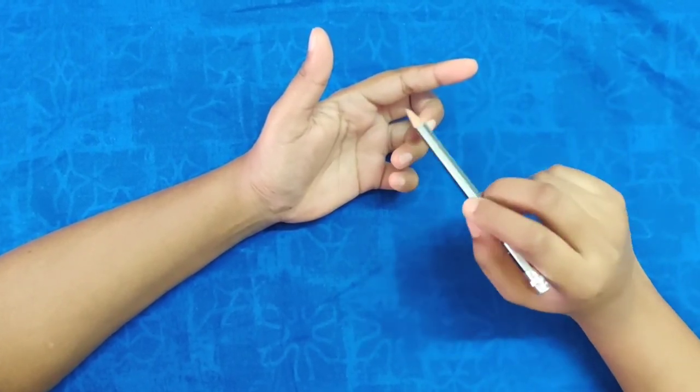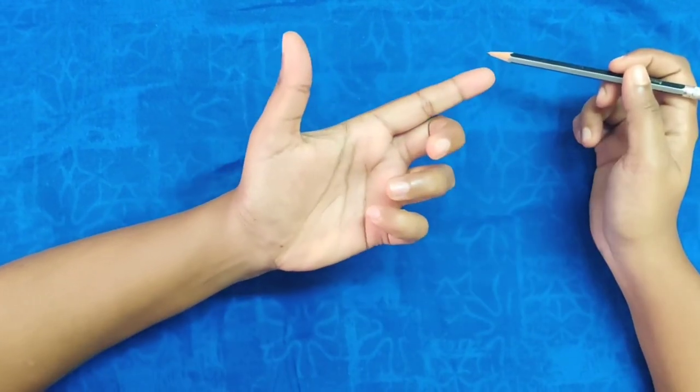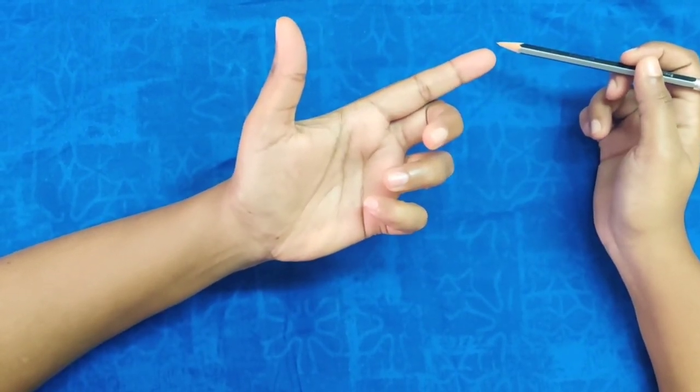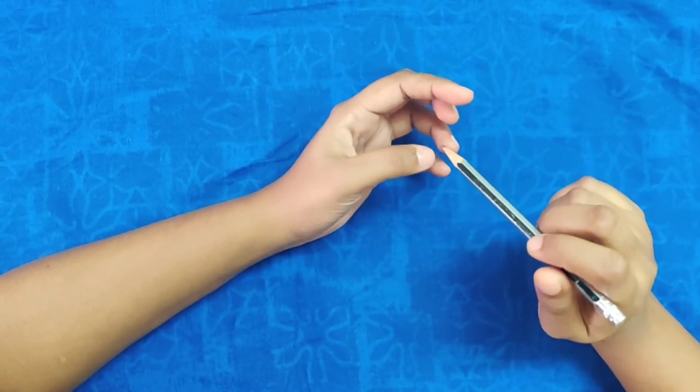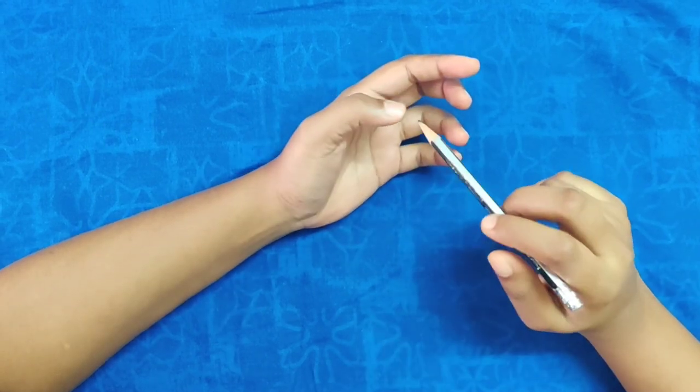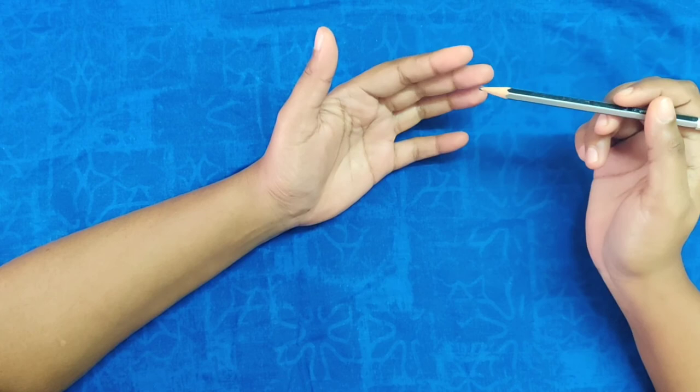But the index finger will remain straight, and this is the sign of benediction for anterior interosseous nerve injury. The diagnosis is made by electromyography of the pronator quadratus, FPL, or FDP of the index and middle fingers.